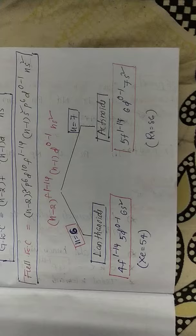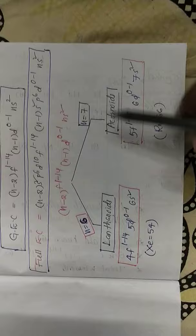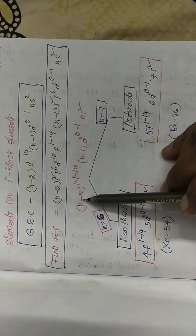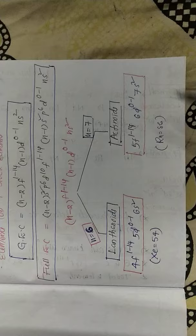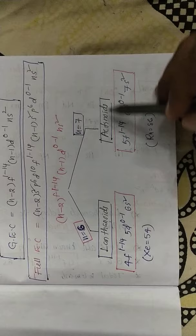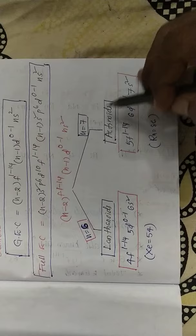Now, how to write the electronic configuration of lanthanides and actinides. The general electronic configuration of F-block elements is (n−2)f¹⁻¹⁴ (n−1)d⁰⁻¹ ns². From F-block elements, lanthanides are separated and actinides are separated.